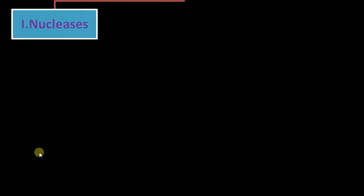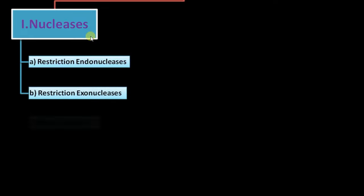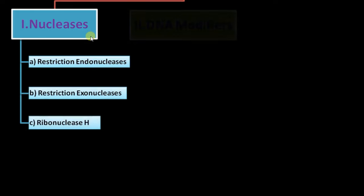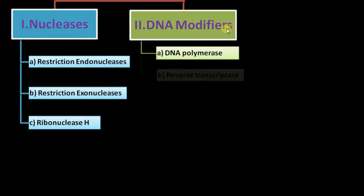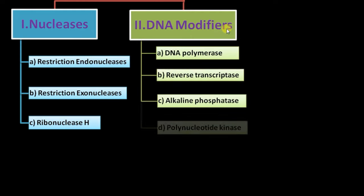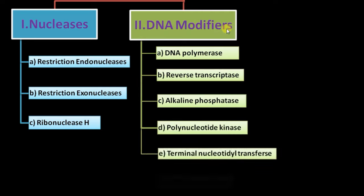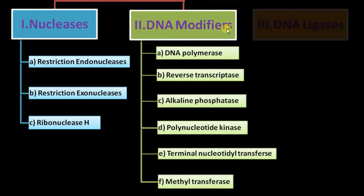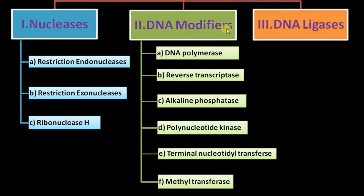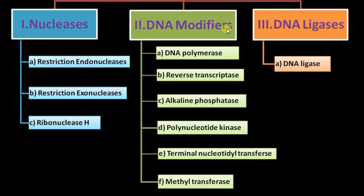Moving into the enzymes in recombinant DNA technology. The first class is nucleases: restriction endonucleases, restriction exonucleases, and ribonuclease H. The second class is DNA modifiers: DNA polymerases, reverse transcriptase, alkaline phosphatase, polynucleotide kinase, terminal nucleotidyl transferase, and methyl transferase. Finally, the ligase enzyme joins two DNA molecules by formation of phosphodiester bond. We will discuss in detail how these enzymes are involved in recombinant DNA technology.